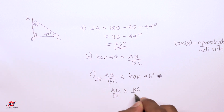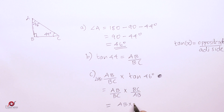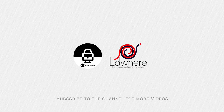Now we multiply: AB by BC into BC by AB, which gives AB into BC divided by BC into AB. The numerator and denominator are the same, so this equals 1. Therefore tan 44 into tan 46 is equal to 1, which is what we had to prove.